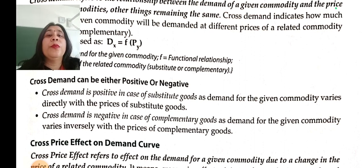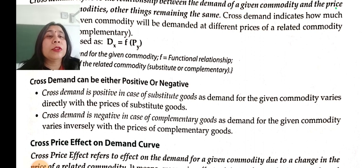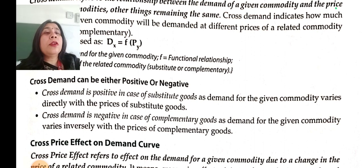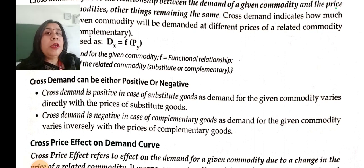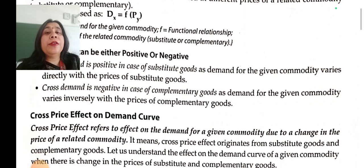Cross demand becomes negative in the case of complementary goods, as the demand for the given commodity will be inversely affected with the price of complementary goods.